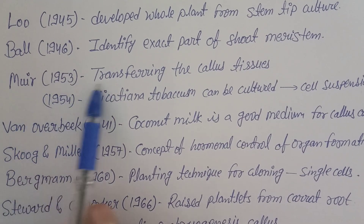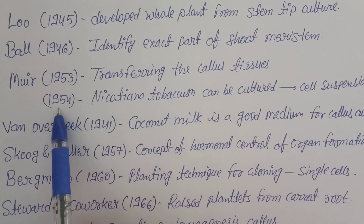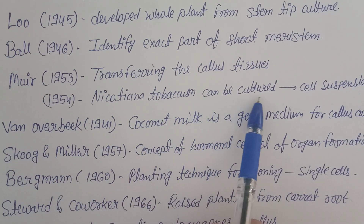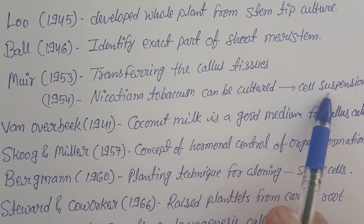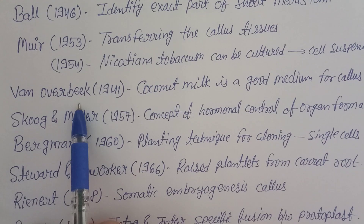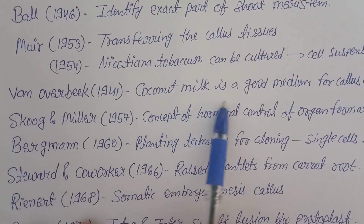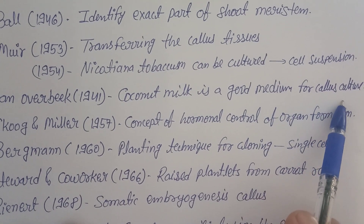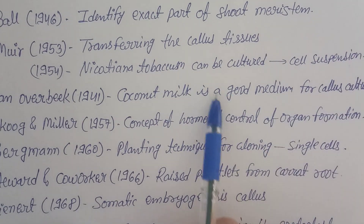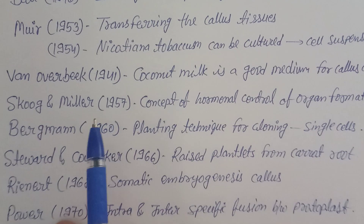Muir in 1953 worked on transferring callus tissue. Then in 1954, Nicotiana tabacum — the tobacco plant — was shown to be culturable in cell suspension. Overbeek also further proved in 1941 that coconut milk is a good medium for callus culture and is useful for the growth of callus.